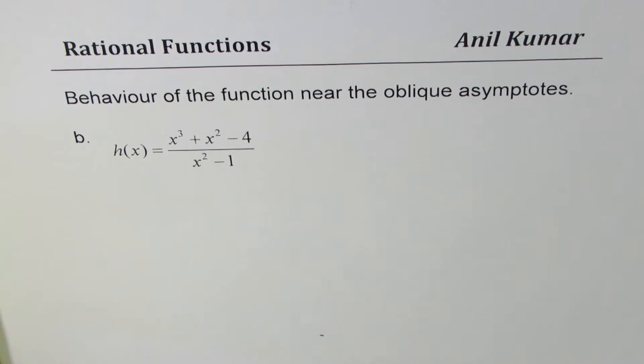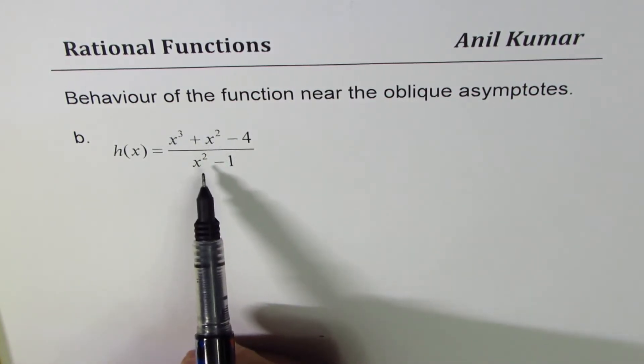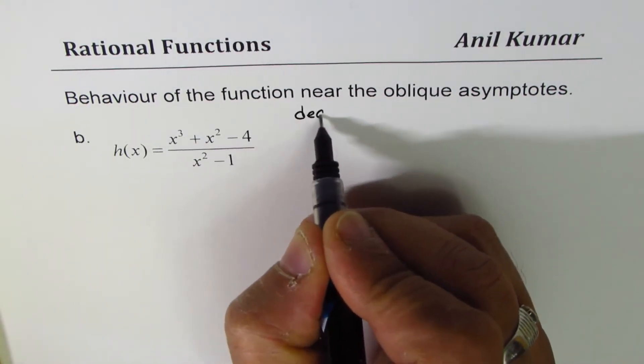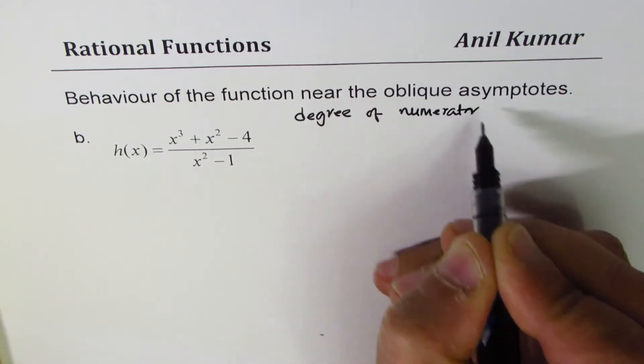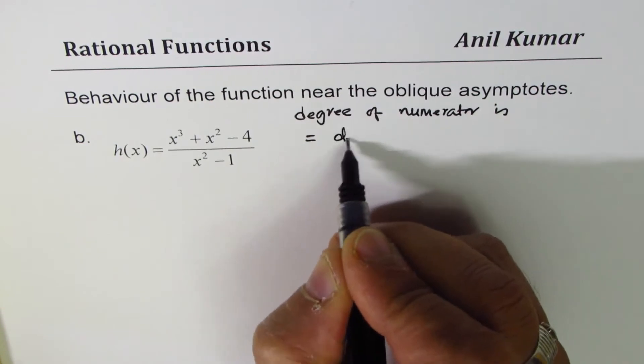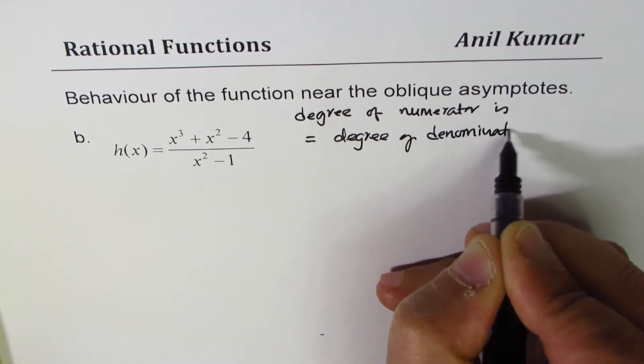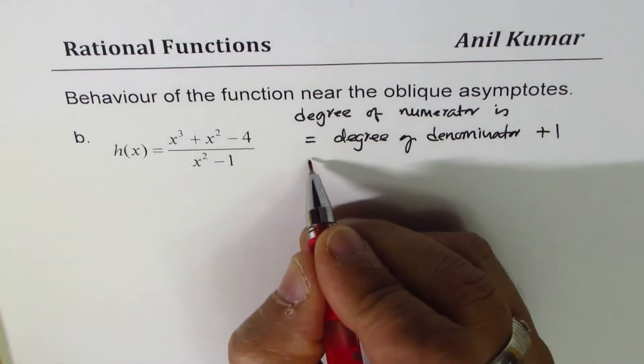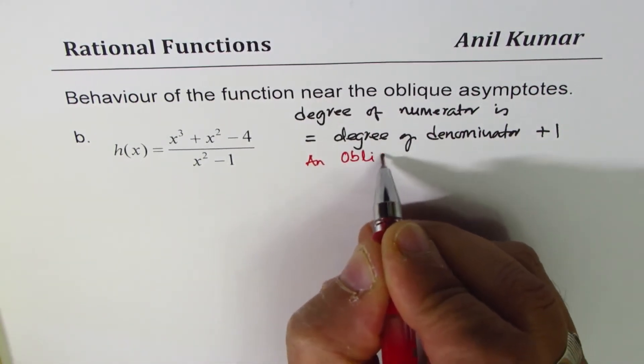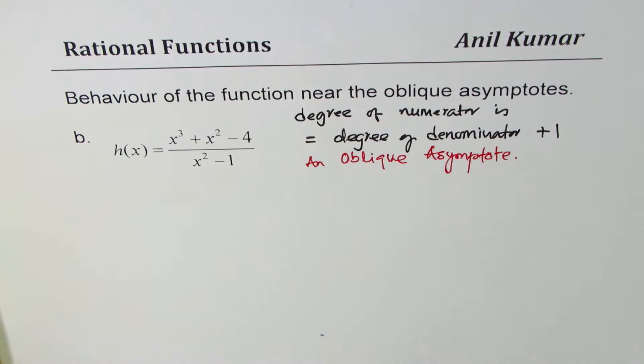You can pause the video, answer the question, and then look into my suggestions. As you can see, degree of numerator is 1 higher. We know degree of numerator is equal to degree of denominator plus 1. When that is the case, we get an oblique asymptote. That is what is expected.